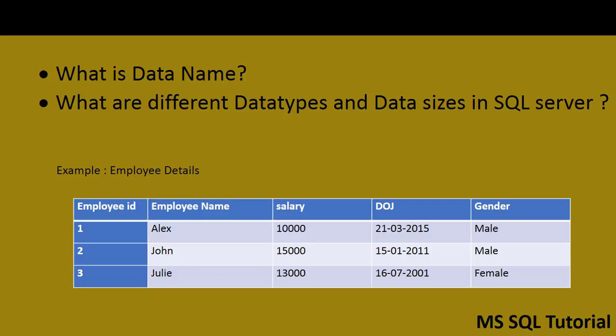Data in SQL Server gets represented based on three key points: data name, data type, and data size. For example, looking at the employee details table on screen, we have employee ID, employee name, salary, date of joining, and gender. Employee ID 1 is Alex, earning 10,000 salary, date of joining 2015, gender male. Employee ID 2 is John, salary 15,000, date of joining January 15, 2011, gender male. The third row is Julie, earning 13,000, date of joining July 16, 2001, gender female.